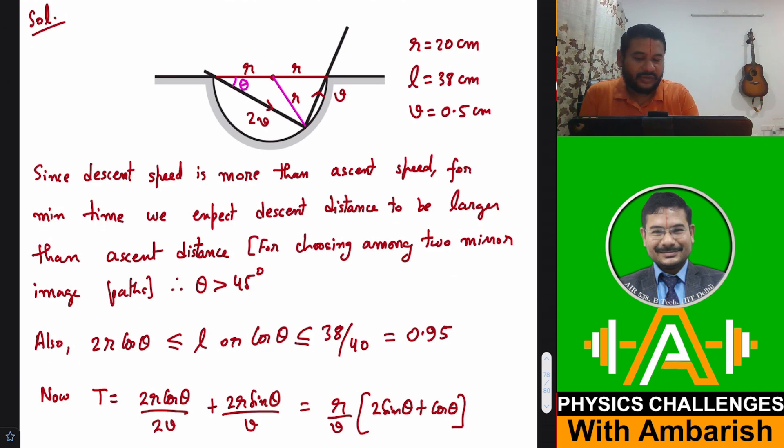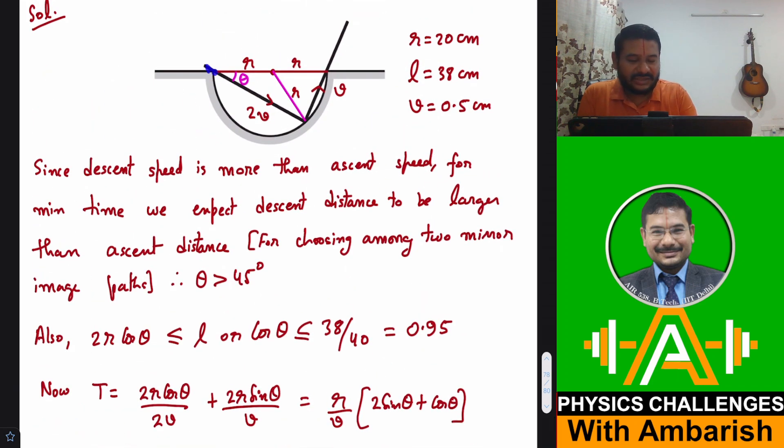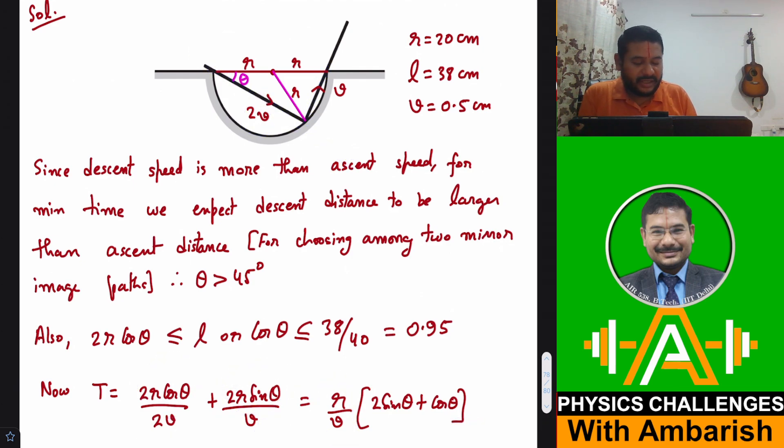Now what about the time of crossing? So if I want to make the function, you can see descent distance is 2R cos θ and descent speed is 2V. So 2R cos θ upon 2V is this time and then ascent time is 2R sin θ divided by small v. You take R by v common and the function in the bracket that remains is 2 sin θ plus cos θ.